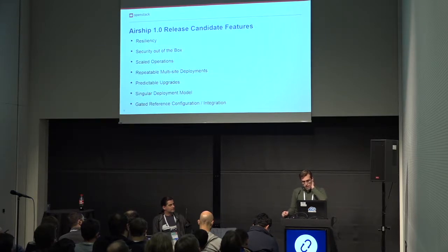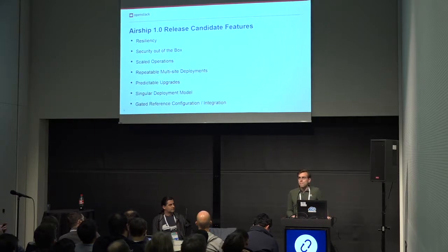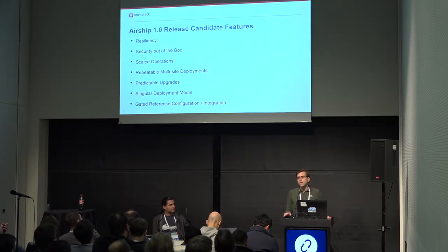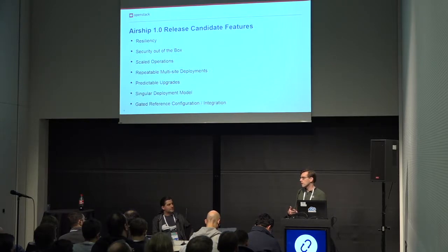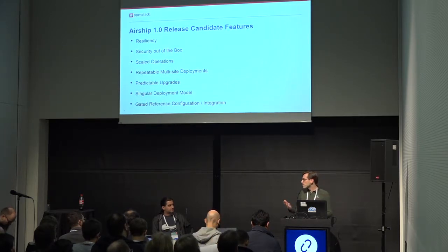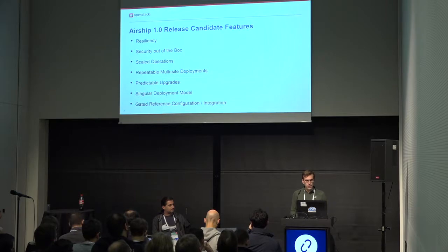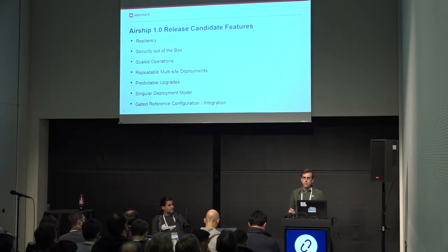We now have a gated reference configuration in Airship Treasure Map, which is primarily filled with reference configuration but also has general project documentation and CI/CD used to test that configuration. It's meant to be a second-step starting point where you can say, 'I get the basic idea, I want to see a realistic example.' We have a smaller example in Airship in a Bottle — a single VM deployment, very simple. Treasure Map is the next step: if you really want to deploy in a test lab, this is our best answer. There's a nightly job that automatically updates the versions of all components from master — latest images, latest charts, including OpenStack Helm — and that's been going well.